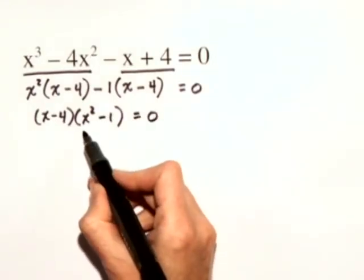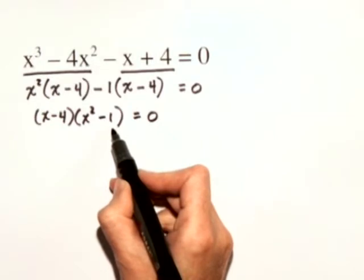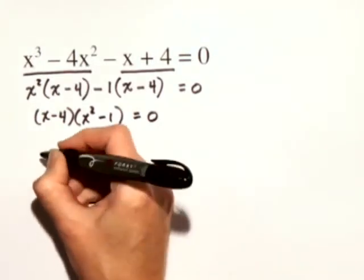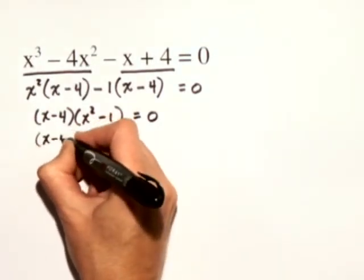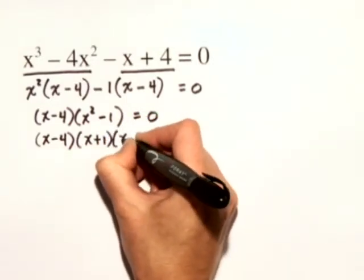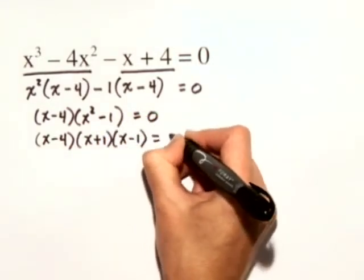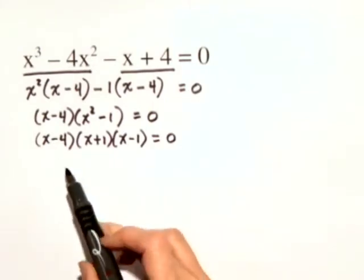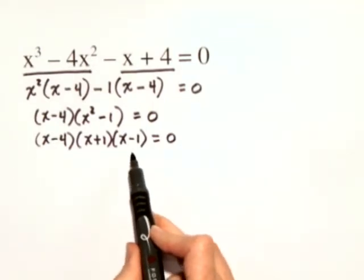This is not yet completely factored because x squared minus 1 is the difference of two squares. So we have x minus 4 times x plus 1 times x minus 1 is equal to 0. Now we've completely factored the left-hand side.